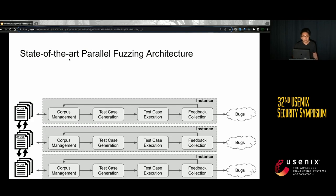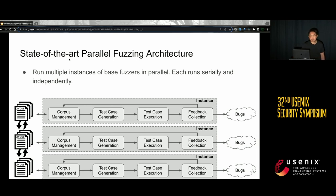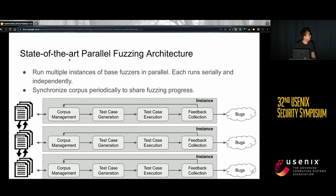Here's the state-of-the-art parallel fuzzing architecture. We run multiple instances of the base fuzzers in parallel, and each runs serially and independently. To share the fuzzing progress with each other, each instance will synchronize the corpus periodically.